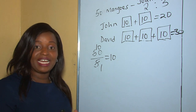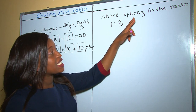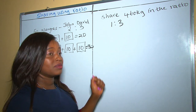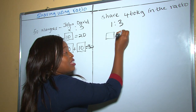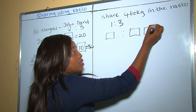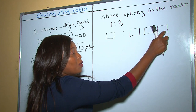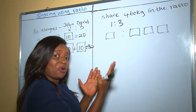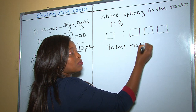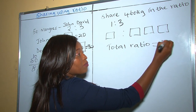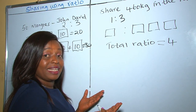In our second example, we are told to share 460 kilograms in the ratio 1 is to 3. The first part is one and the other part is three, so in total there are one plus three equals four parts. This four is our total ratio.